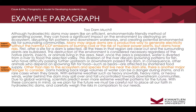Our fourth technique is support sentences to identify causes or effects. We see two clear examples in this paragraph. The sentence between the topic sentence and the first main point—'Many may argue dams are a productive way to generate electricity without the harmful CO2 emissions of burning coal or the risk of nuclear plants, but dams have significant risks'—works to bridge into the first main idea. We've already emphasized in the topic sentence that dams are a danger to ecosystems, fish patterns, and downstream waterways, and a potential risk for surrounding communities. This sentence re-emphasizes that main point before we move into the body of the paragraph.